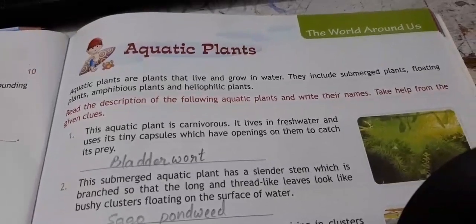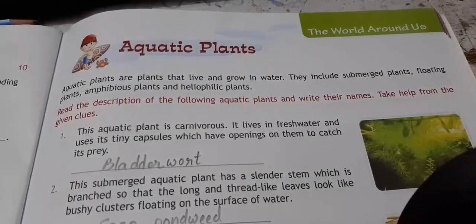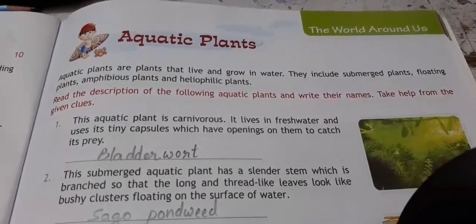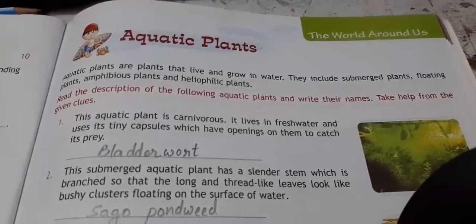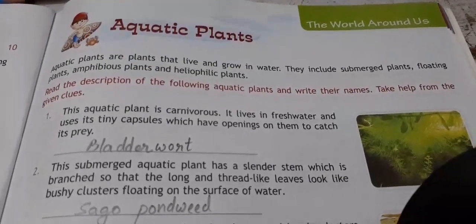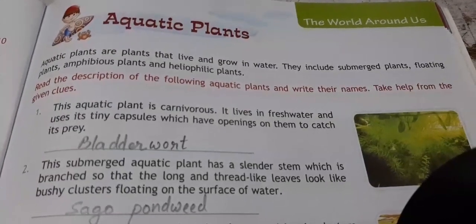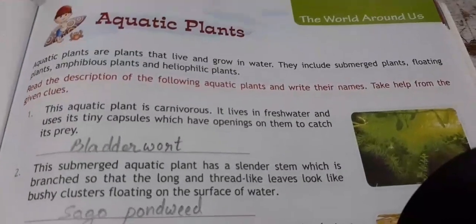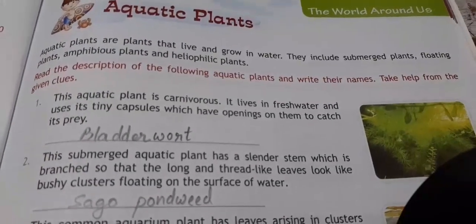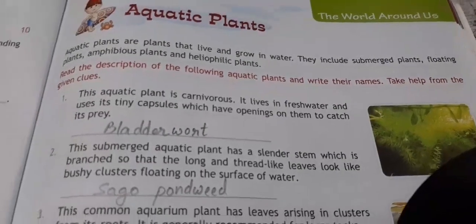Hello 6th class, we are starting a new term with a new chapter: the world around us. Today we will be learning about aquatic plants. We all know that aquatic plants are plants that live and grow in water. Some plants are floating, some are submerged, and some are amphibious — they live on land as well as in water. We are also looking at a number of other plants.